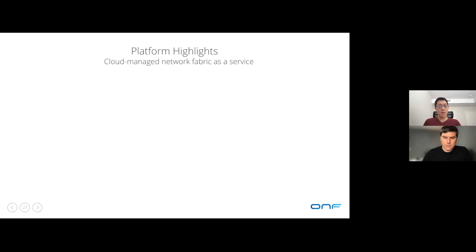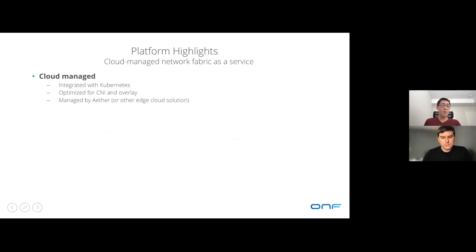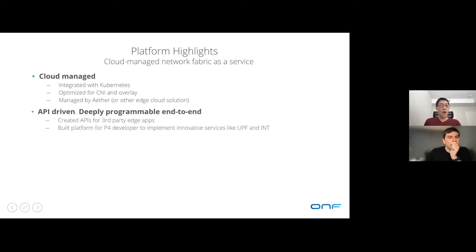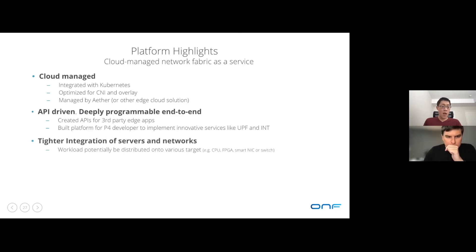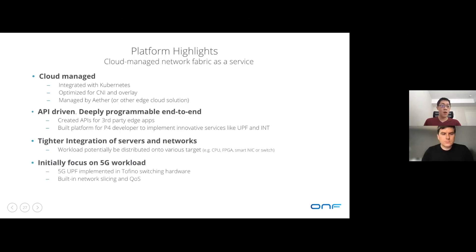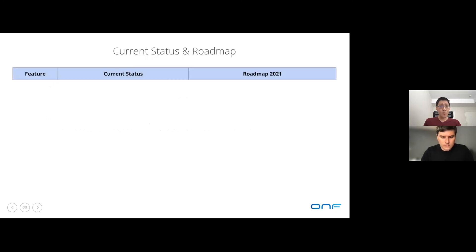To summarize: SD Fabric is a cloud-managed network fabric as a service. It's integrated with Kubernetes, optimized for CNIs and overlay, managed by Ether or other edge cloud solutions, API-driven, and deeply programmable end-to-end. We created APIs for third-party edge applications and enterprise managers, and built a platform for P4 developers to implement innovative services like UPF and INT. We have tighter integration of servers and networks, with workloads distributable onto CPU, FPGA, and smart network switches. Our initial focus is 5G workload — implementing 5G UPF on Tofino switches with built-in slicing and QoS. Current status includes distributed UPF on all leaf switches, slicing and QoS design complete with switch implementation in progress, INT switch support for flows, drops, and queue reports with intelligent triggers, and a POC for INT host reporting based on Calico eBPF CNI. Scale testing targets 10,000 UEs and 100 ops/second by year-end with 95th percentile failure recovery under 50 milliseconds.